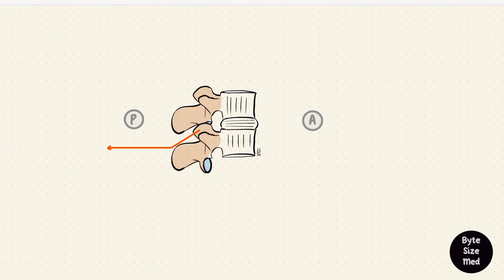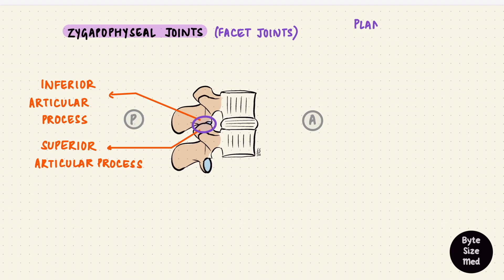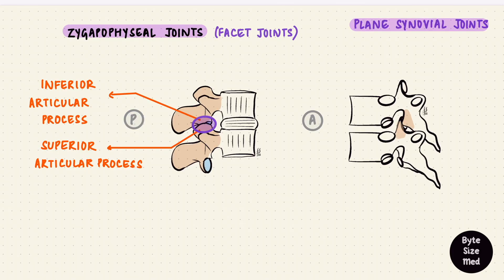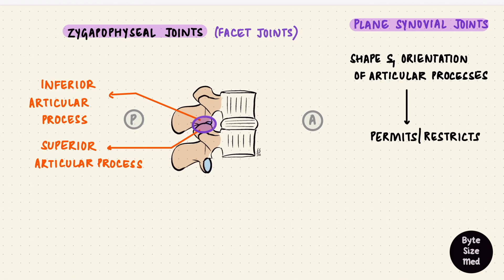Between the superior and inferior articular processes of the vertebrae are the zygapophyseal joints, also called facet joints. These are plain synovial joints, each with a thin joint capsule. The articular processes attach to each other at different angles depending on which part of the vertebral column we're looking at. The shape and orientation of these processes determines the type of movements that can happen at each region.